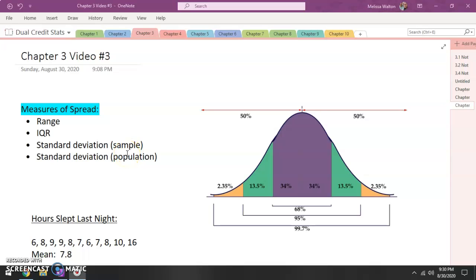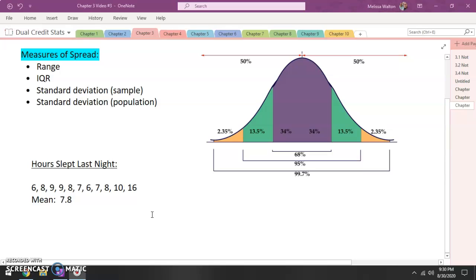So we are going with our example that we had in the past two videos. We're going to talk about hours slept last night. Now I know that my mean is 7.8 hours, but I want to talk about how spread out this is. So this is a nice normal distribution, and with a normal distribution you can put your mean in the center. So our mean for this is 7.8 hours of sleep. That is our center. But I do want to talk about how spread out this data is.